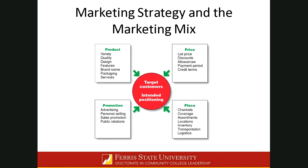The marketing mix is made up of four primary elements. You can look at the seven P's instead of the four P's — product, price, place, and promotion. You'll read about that in the article on the concept of the marketing mix by Dr. Khan; I want you to digest those concepts. But today I want to focus on the primary four elements: product, price, place, and promotion.